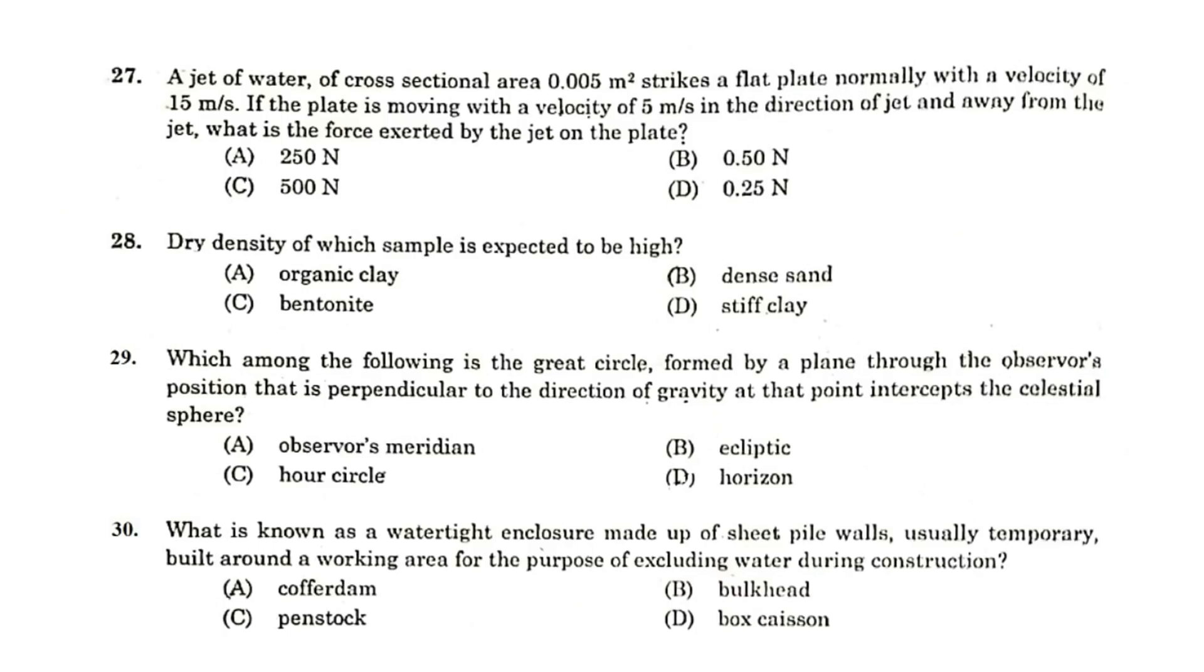100 kN. A jet of water of cross-sectional area 0.005 m² strikes a flat plate normally with a velocity of 15 m per second. If the plate is moving with a velocity of 5 m per second in the direction of the jet and away from the jet, what is the force exerted by the jet on the plate? 500 N.